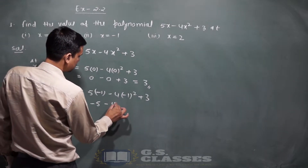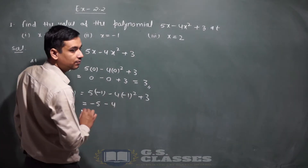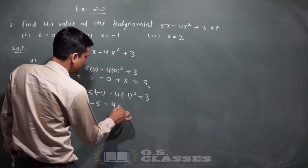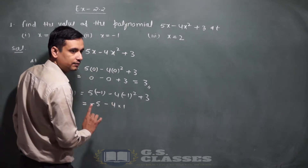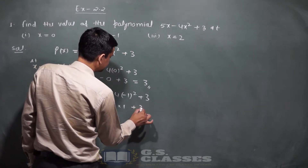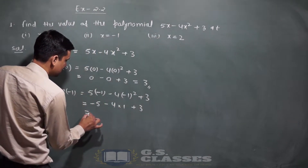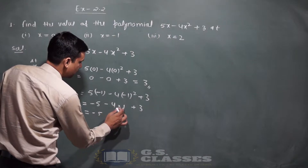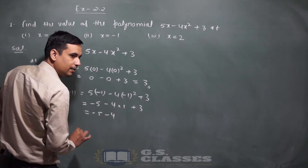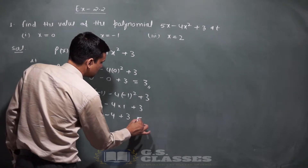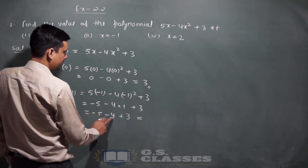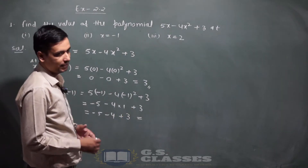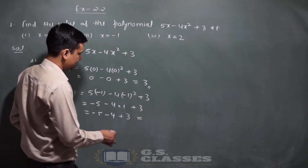Minus 4 — minus 1 का square करेंगे तो plus 1 आएगा। तो into 1 लिखता हूँ। Further solve करते हैं: minus 5, minus 4 into 1 = minus 4, plus 3। Minus 5 और minus 4 मिलकर minus 9, और उसमें plus 3 करेंगे तो minus 6।